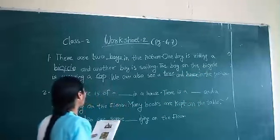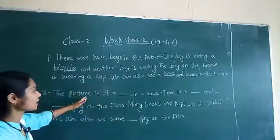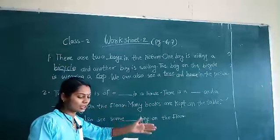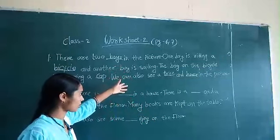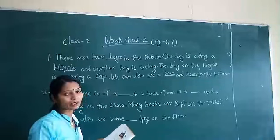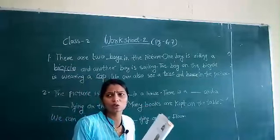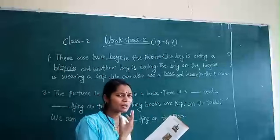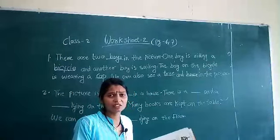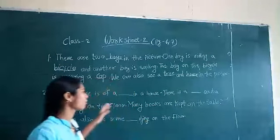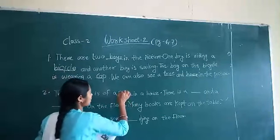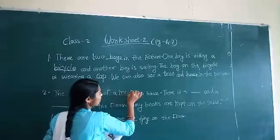The next picture is just below this paragraph. It is a picture of a mess in a house — talking about the room, it is very messy. All the things are scattered here and there. The picture is of a mess in a house. Mess means very dirty, not clean.